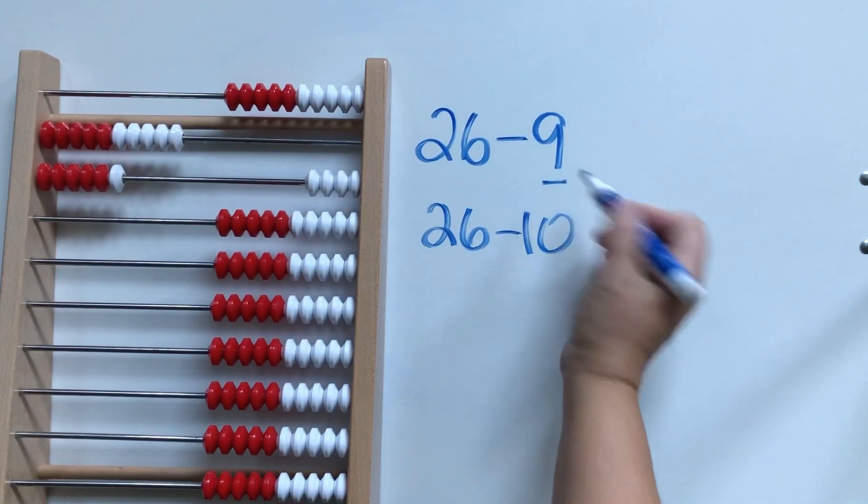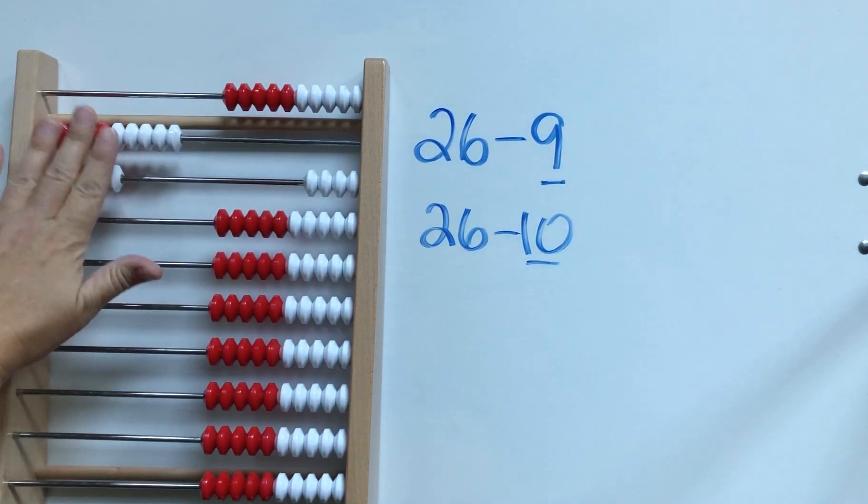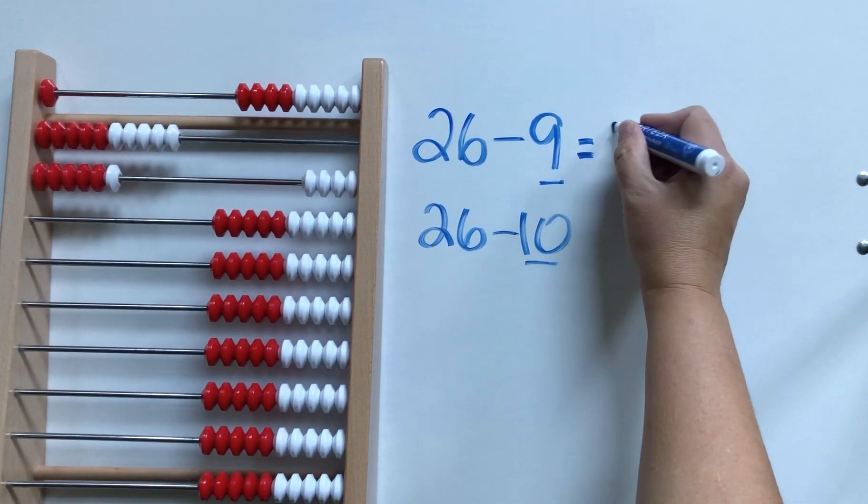However, we took away one too many because we were only supposed to take away 9 but we took away 10, so now we have to add that one back. So we had 16, we'll add that one back to make 17. So 26 subtract 9 is 17.